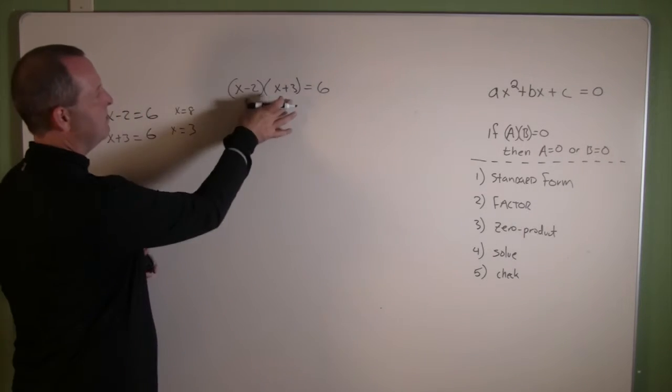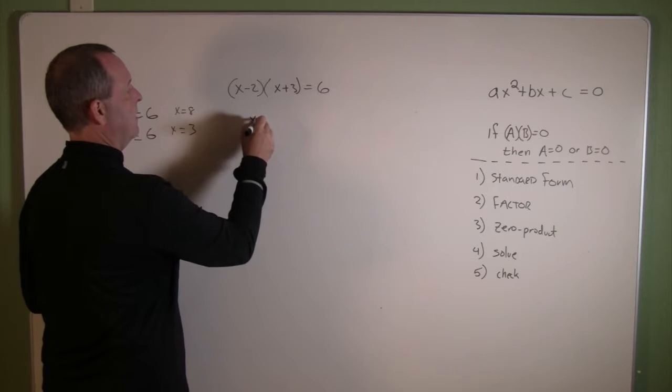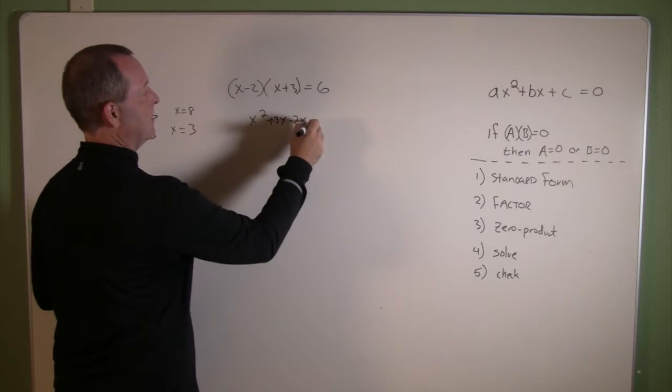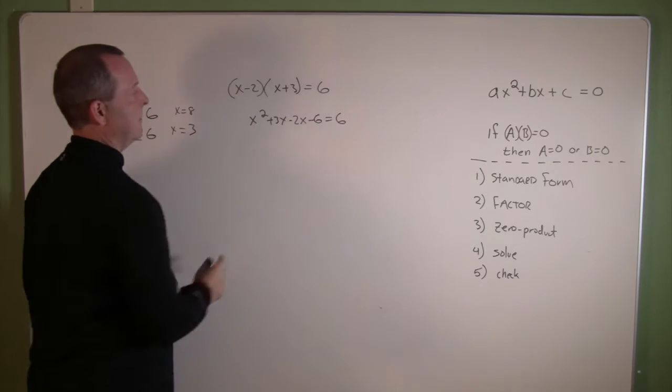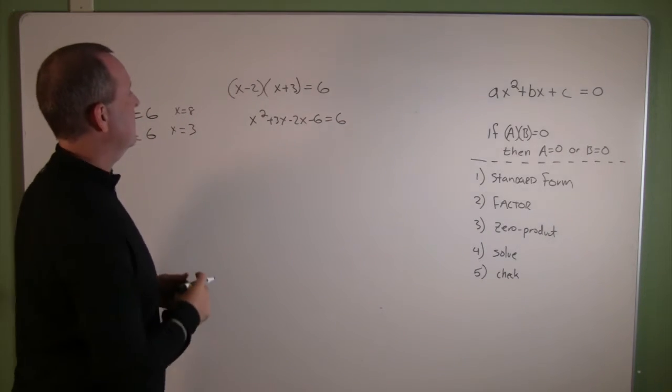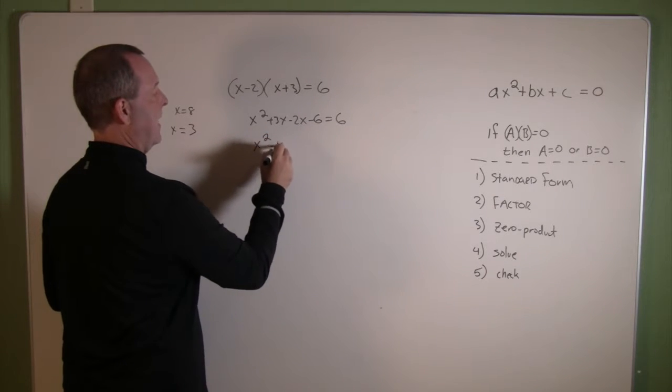So that's x squared plus 3x minus 2x minus 6 equals 6, I just foiled it out. Let's combine some like terms: x squared plus x minus 6 equals 6.